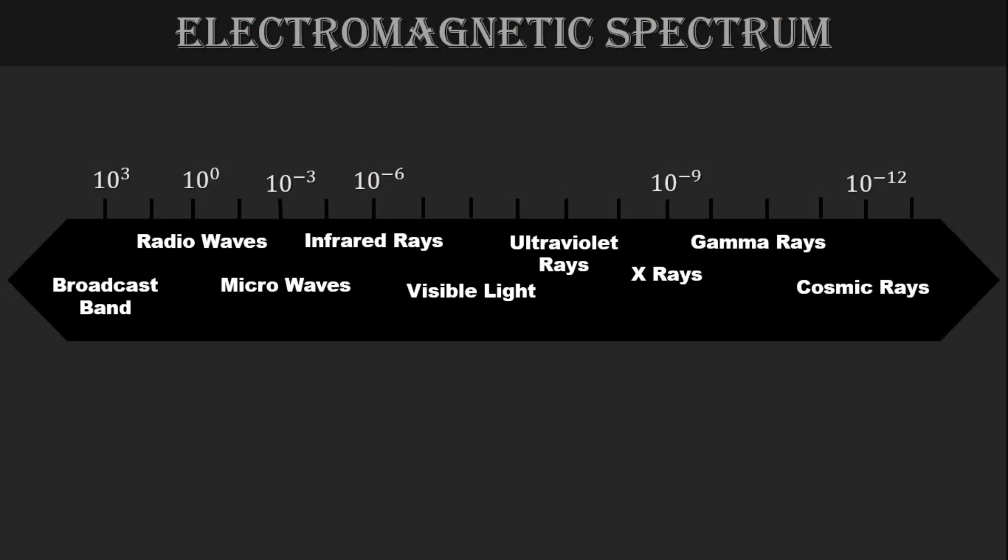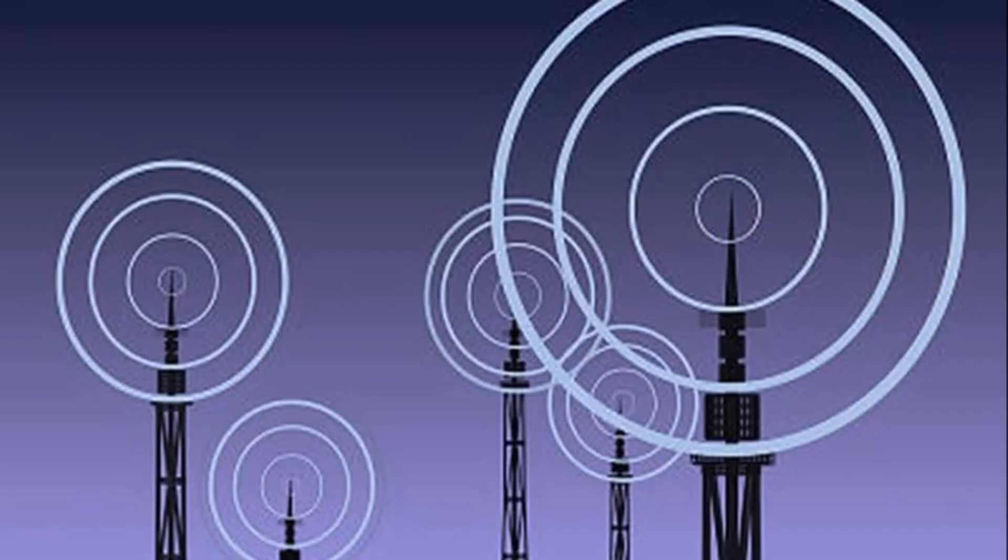After this broadcast band, there are radio waves. Radio frequencies which are used for two-way communication reside at the center of the electromagnetic spectrum. These frequencies are used for applications such as TV and radio broadcasting.